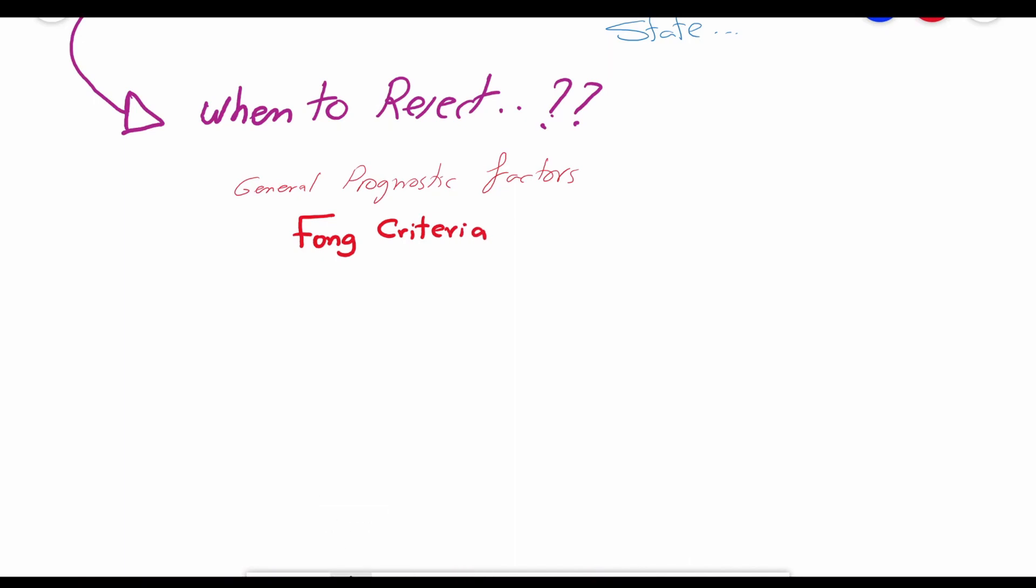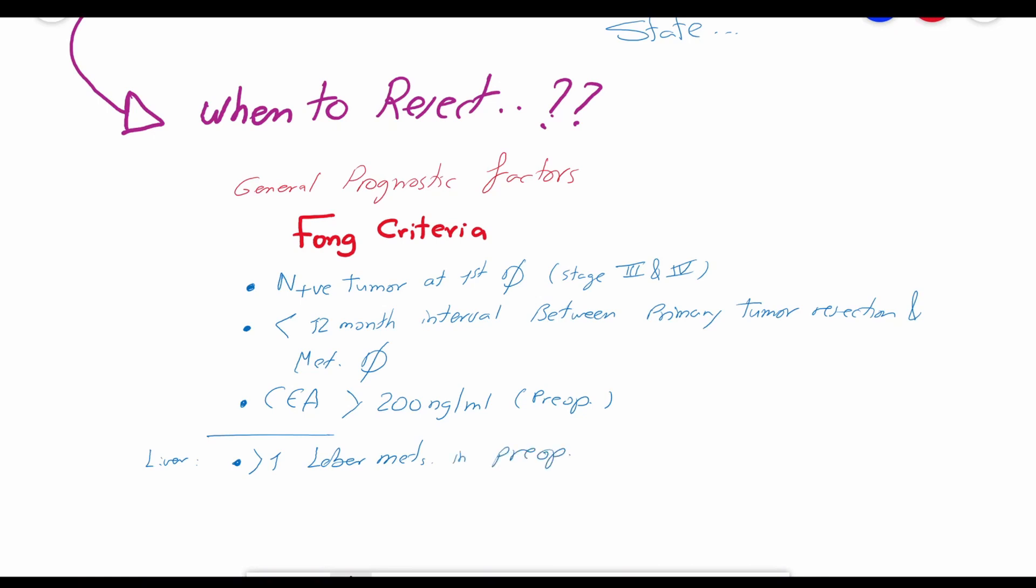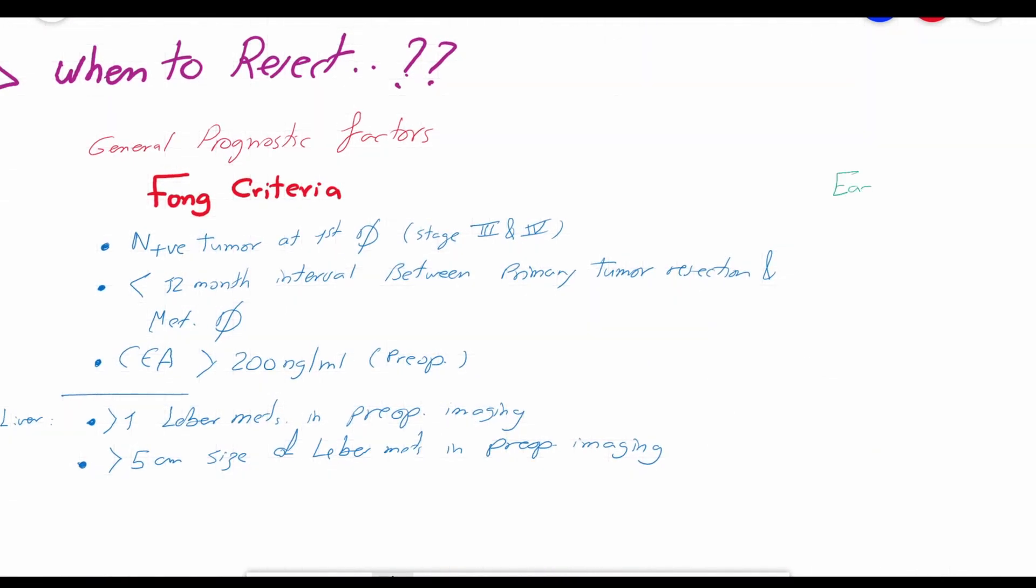A good tool to use in this regard is the FONG criteria, which are: node positive tumor at the first diagnosis stage 2 or 3 when addressing a metachronous metastasis, less than 12 months interval between the primary resection of the tumor and the diagnosis of the metastasis, preoperative carcinoembryonic antigen more than 200 nanogram per milliliter, and 2 more factors regarding the liver metastasis: more than 1 liver foci in the preoperative imaging, and the size of the largest liver focus is more than 5 cm in the preoperative imaging.